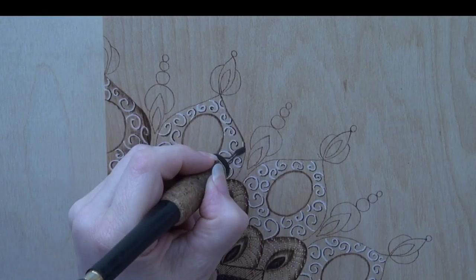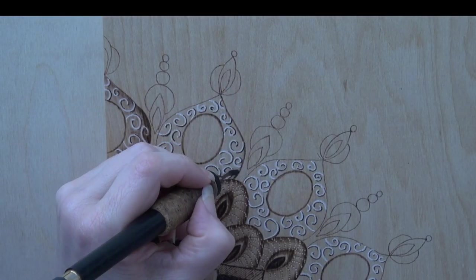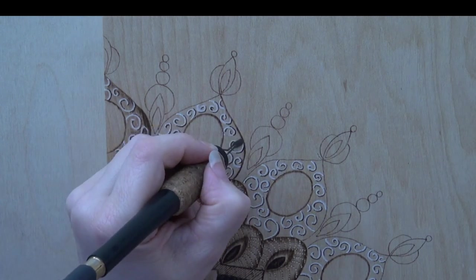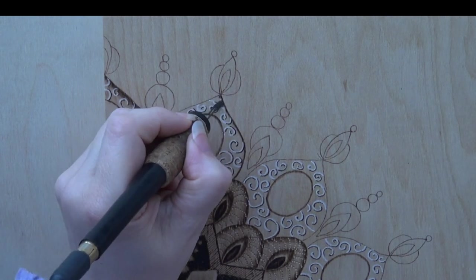Use a shader pen tip to burn darkly along the outer edges of the pods. Don't worry too much about burning over the charcoal lines.